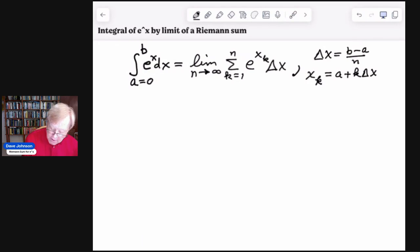And x sub k equals a plus k times delta x. Let's go ahead and fill this in. So if a is zero, then you get b divided by n. And also if delta x is b over n and a is zero, then you get k b divided by n.